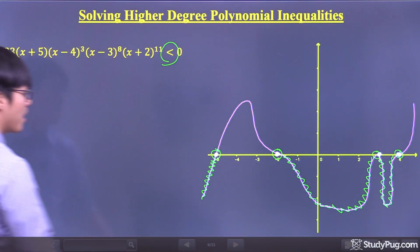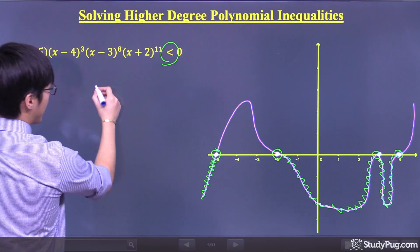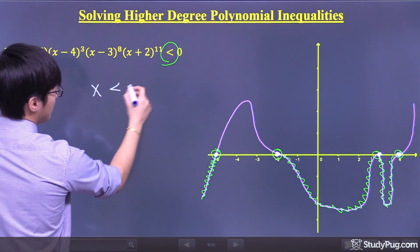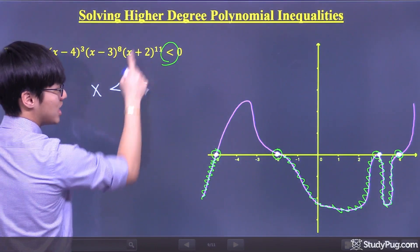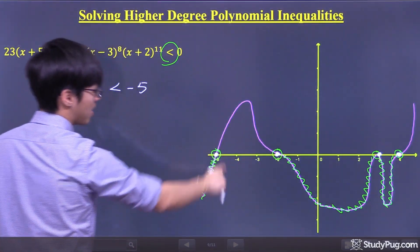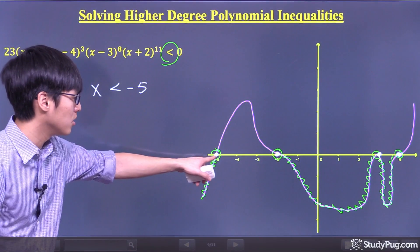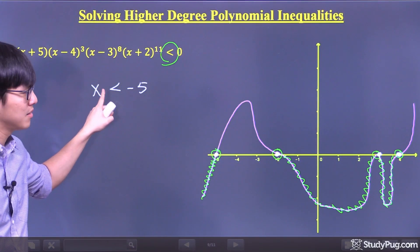Now write them out one by one. We have x is less than negative five. We write it's less than because it cannot equal to. Remember, it cannot equal to the endpoints. So negative five is not included. That's why we have less than.